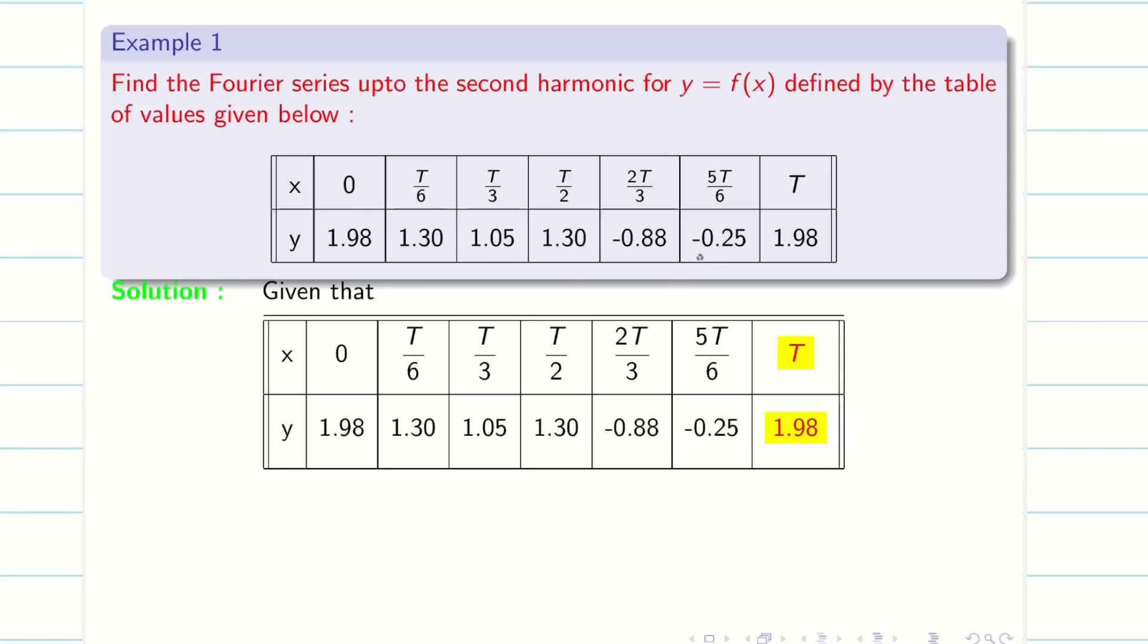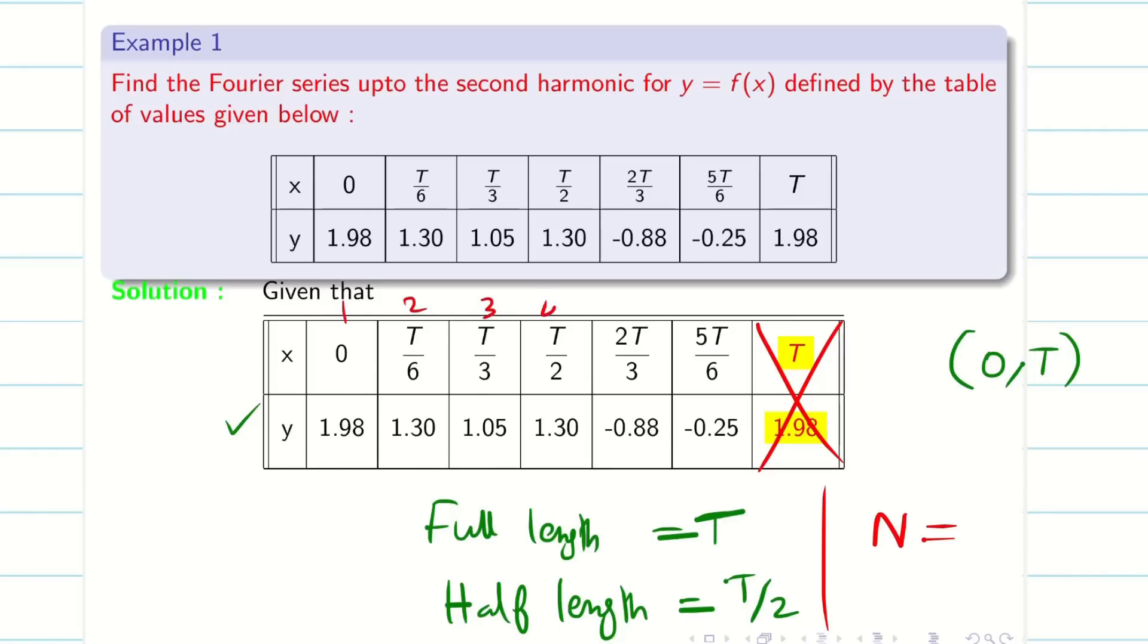Let's write the given values. Immediately I'll check the y value: it's 1.98 here and also 1.98 at the end. So my starting and ending values are the same. When I want to count n, I need to delete the repeated value. Since the starting and ending values are the same, the interval is going to be 0 to t, so my full length is t and my half length is t by 2. When I count n after deleting the repeated value, I count the remaining values: 1, 2, 3, 4, 5, and 6. So my capital N equals 6.